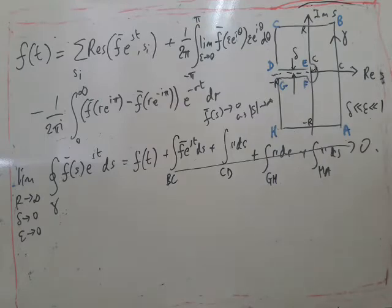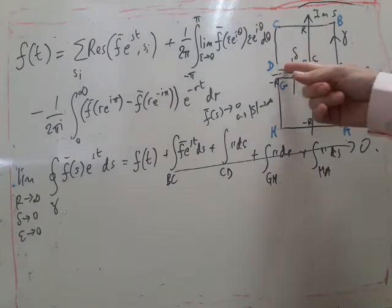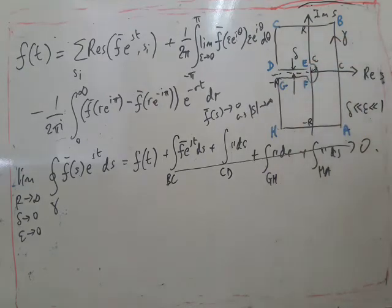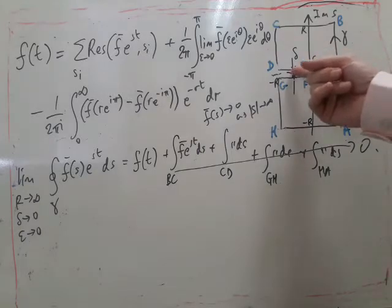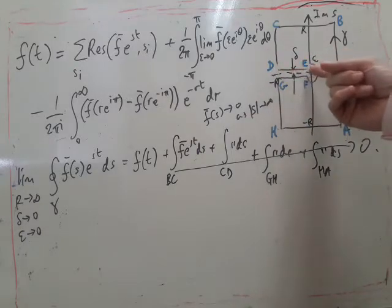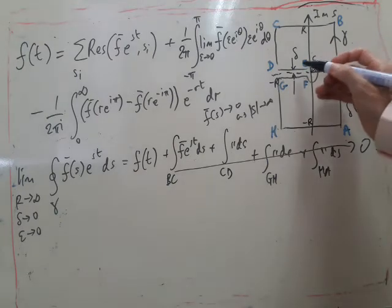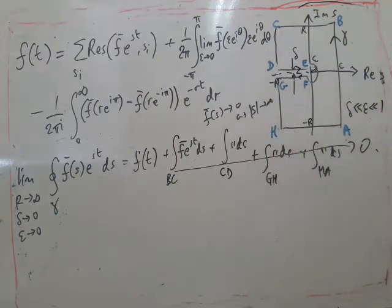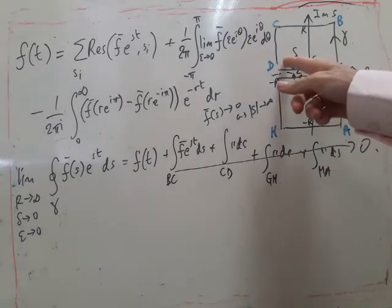So that leaves us with three integrals left. Integral along here, along here and around this little circle here or nearly a circle. Now because there's a branch cut along negative real s, the integral along here does not cancel. This integral along here, if they did cancel, then it means that there will be no branch cut there.